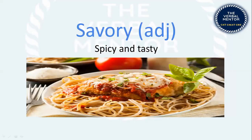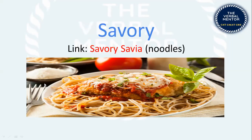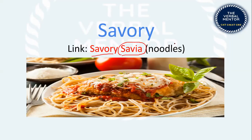Next: 'savory.' While luscious is sweet and juicy, savory is spicy and tasty. You should not use this word for just any food — savory is specifically used for food that is spicy and tasty. Chinese food, noodles, manchurian — all savory food. Memory tip: savory sounds like 'saviya,' which is what noodles are called in Hindi. Savory — saviya.